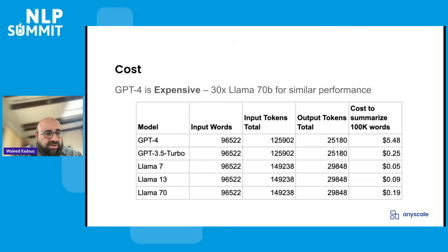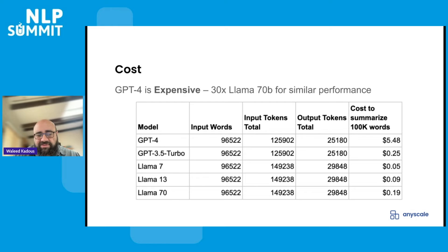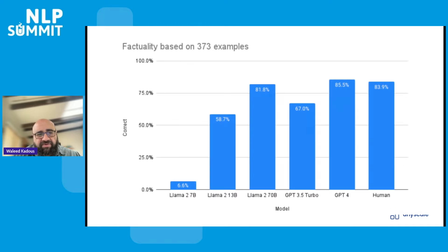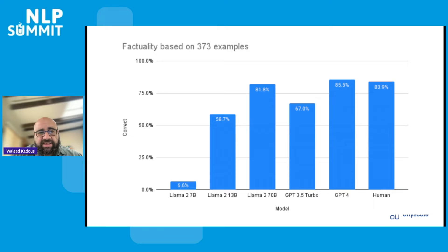We ran an experiment looking at summarization — summarizing texts of about 100,000 words. If you use GPT-4, it's about $5.50 per 100,000 words, whereas Llama is about 20 cents per 100,000 words. That's obviously a huge price difference. But the obvious counter-argument is: doesn't that come with a loss of performance? It's very hard to generalize across many domains. But in our experience looking at summarization — specifically whether summaries are factually accurate — we see in this test case of summary ranking that GPT-4, human, and Llama 2 70B are all within the same ballpark of around 84% accuracy.